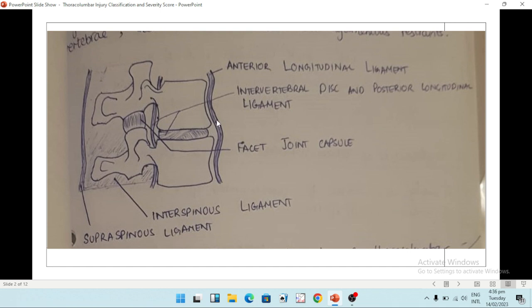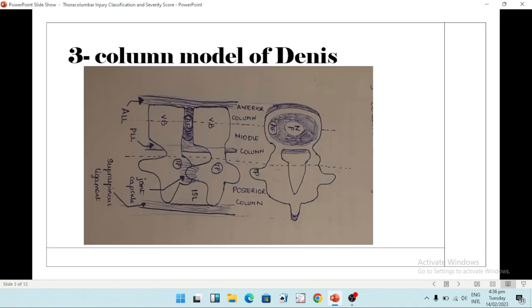Now we come to the three-column model of Dennis. Usually we consider the spine to consist of three parts: anterior column, the middle column, and the posterior column. The anterior column consists of the anterior half of the disc and body and the annulus fibrosus anterior part, along with the anterior longitudinal ligament. The anterior longitudinal ligament is very thick and very stable.